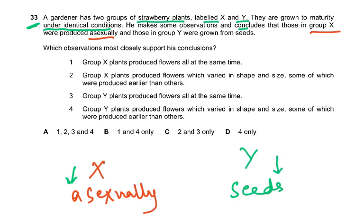Which observation most closely supports this conclusion? If group X is produced asexually, they produce flowers all at the same time. Yes, that should be the case if they are asexual - that means they're all clones and they will produce flowers all at the same time. So one is correct.